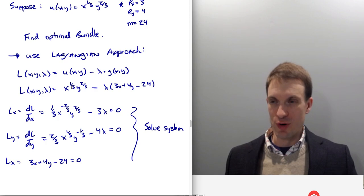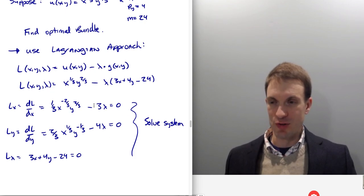Partial with respect to Y, so it's gonna be 2/3 X to the 1/3. This part's coming along for the ride. Y to the, well, reduce the power by one, minus 1/3. And then this portion is just gonna be negative Lambda times 4. Now I'm gonna solve this system.